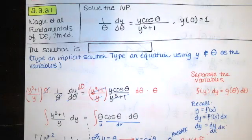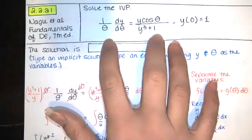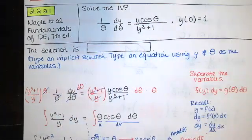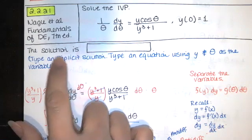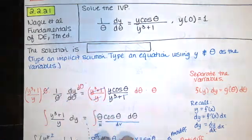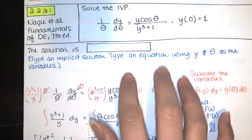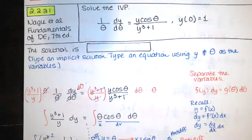This is problem 2.2.21 from the Nagel Fundamentals of Differential Equations text, 7th edition. This is a separable differential equation and it has an initial condition. We're asked to type an implicit solution and they specifically want a solution involving y and theta as variables.